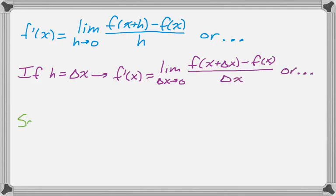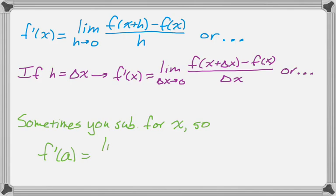Or there's actually a third case here, which is really exactly the same as both of these. Sometimes you substitute in for x. So f prime of a, the answer here would be a number instead of a function, is the limit as h approaches 0 of f of a plus h minus f of a over h.